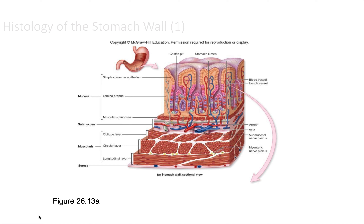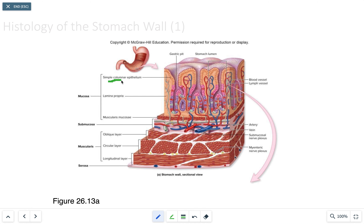Looking at the cellular function of the stomach, the first structure we see is a layer of simple columnar epithelium. As we get deeper into the mucosa layer, there are specialized cells lining the gastric pits. Each of these cells releases secretions into the gastric pits, which are then processed in the stomach lumen.